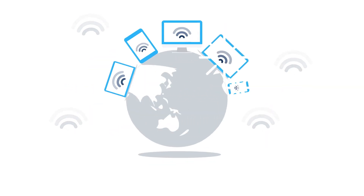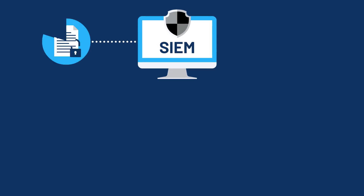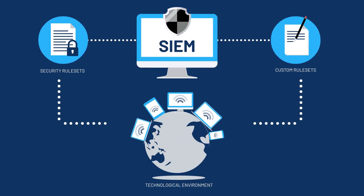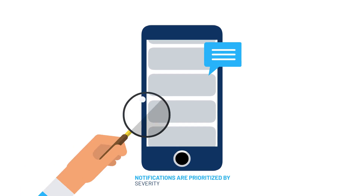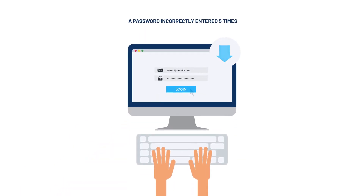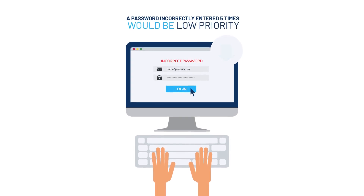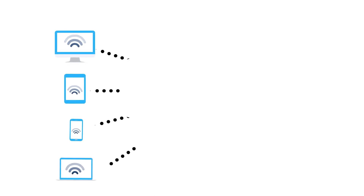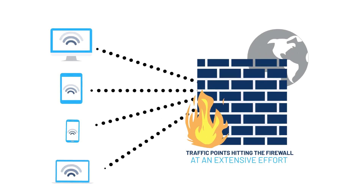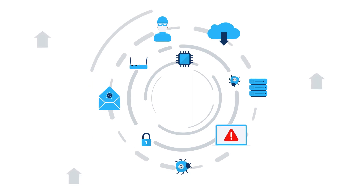Not all technological environments are created equal, so SIEM focuses on events based on security rulesets and creates custom rulesets that fit your unique environment. Notifications are prioritized by severity of the potential threat — a password incorrectly entered five times would be low priority, as opposed to something more alarming, such as various traffic points hitting the firewall at an extensive effort, which would be a high-priority alert typical of a DDoS attack.